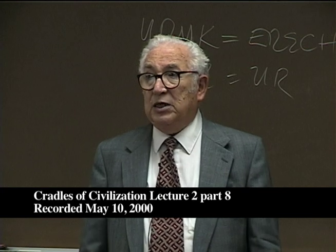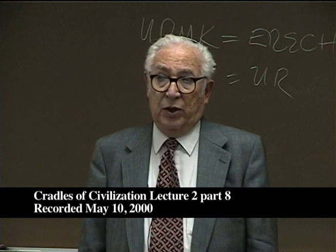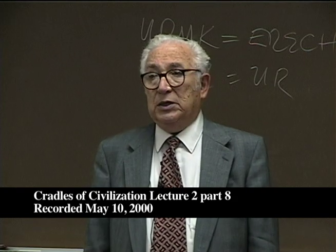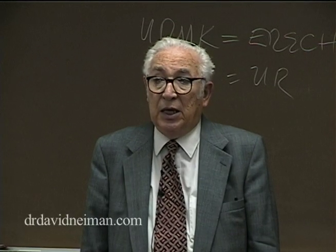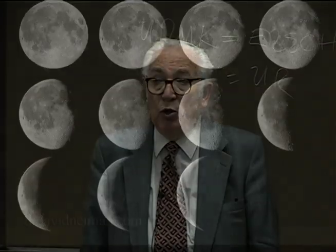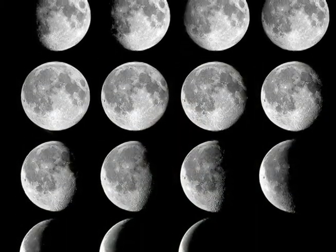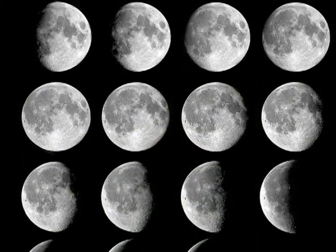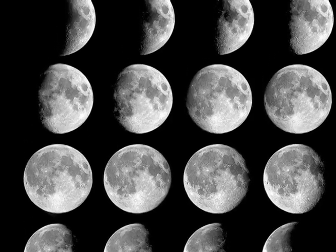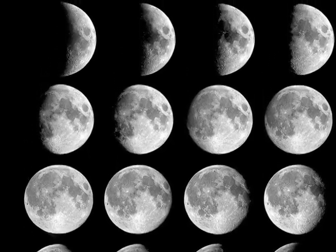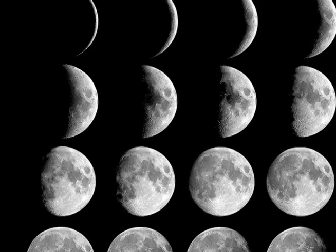The Babylonian calendar is based on a lunar month. That is, each month begins on the new moon. And if you observe the moon, and I think you should, you will observe that the moon goes through phases. At the beginning of the cycle, it's a very thin crescent.